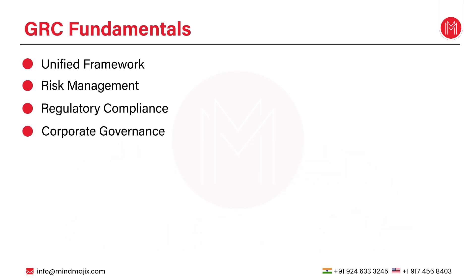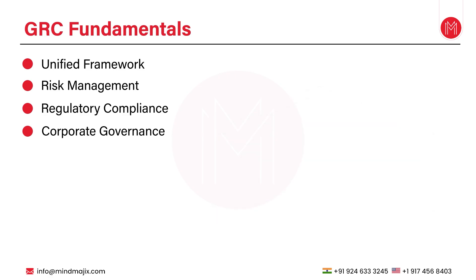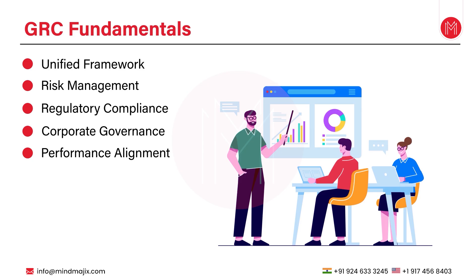The next point is corporate governance. Effective governance requires clear rules, responsibilities, and accountability structures within an organization. GRC systems help monitor and enforce these governance practices. Finally, we have performance alignment — GRC is not just about risk avoidance. It also ensures that risk and compliance efforts are aligned with the organization's strategic objectives, ultimately driving performance and growth.